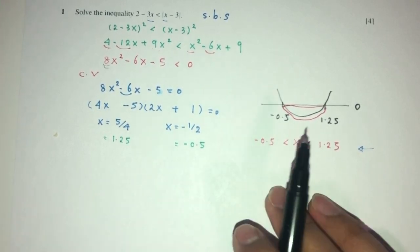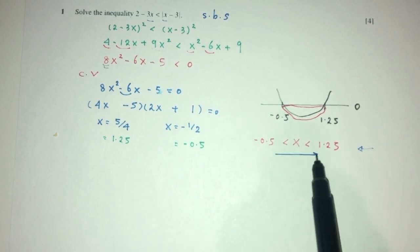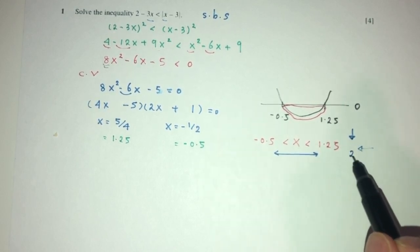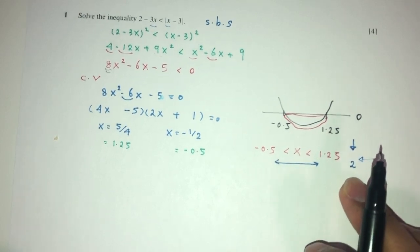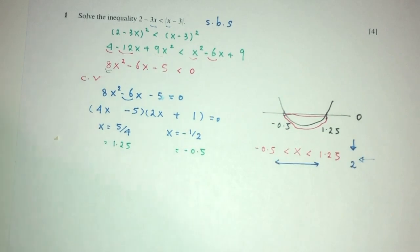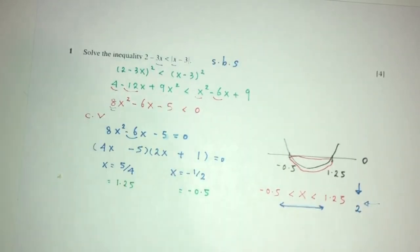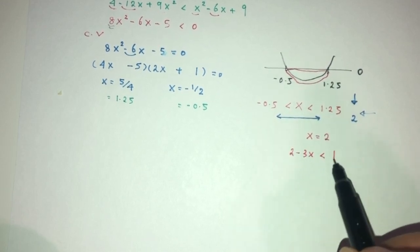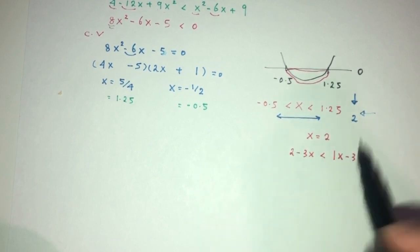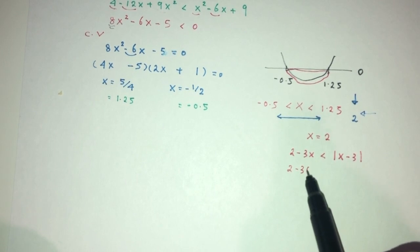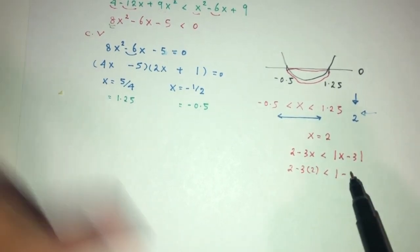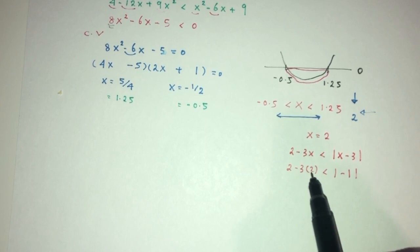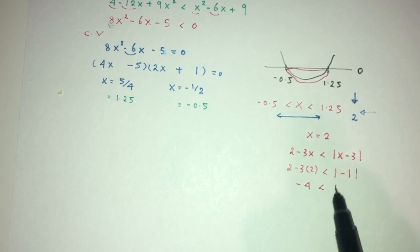In this answer, we are saying that x can only be between those two values. Now we can check. Let me find some value over here and see if it can be outside or not. For example, let me choose x to be 2. If I choose x to be 2 and it works, it will mean that this is not the hard limit. Let me place this back in my main equation. So let x equal 2. My equation is 2 minus 3x less than the modulus value of x minus 3. Replace: you will have 2 minus 6, that will be minus 4, which is indeed less than 1. So it works.